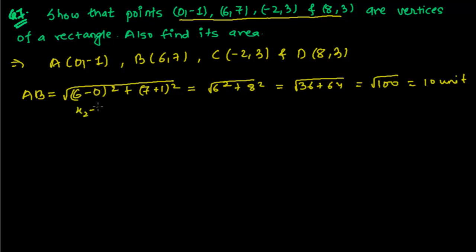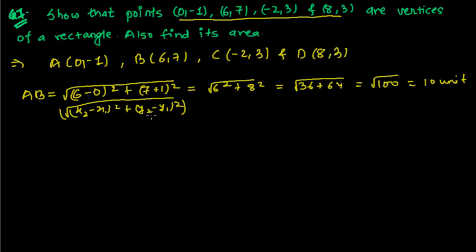This is the distance formula: √[(x₂ - x₁)² + (y₂ - y₁)²]. If you're watching for the first time, I suggest you go to my website skydingblogger.com, or search for the distance formula on this YouTube channel. Now let me find out the distance BC.